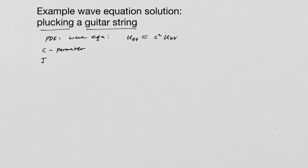The next thing we have to do is look at an initial condition — the initial position. X is going to be on the domain 0 to 1; that just keeps everything simple. And our initial position is going to be U at (X, 0) equal to X times (1 minus X) times A, where A is just a parameter.